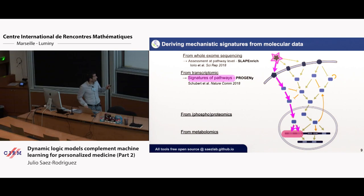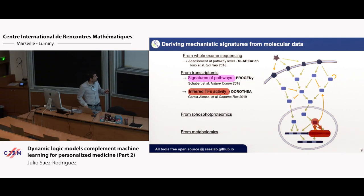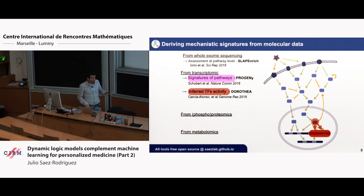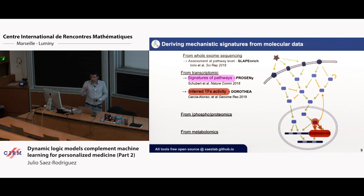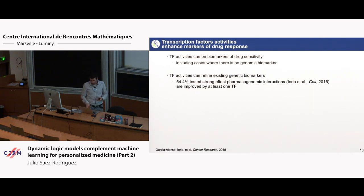So this is the pathways PROGENy. As I mentioned before, we do something similar to estimate transcription factor activities. And there we did a lot of benchmarks that are in the papers. But just to show you an example of how this can help — the same thing as with the pathways.